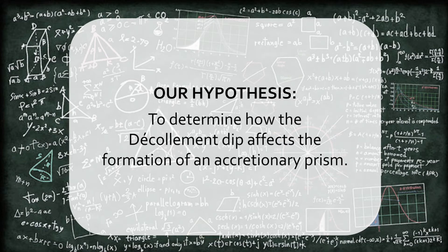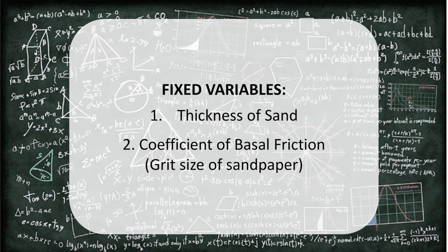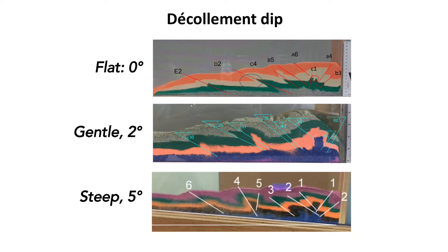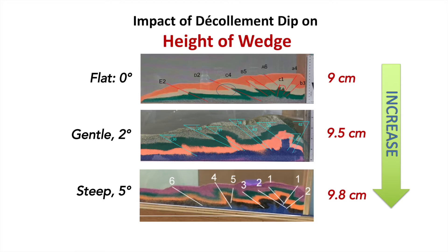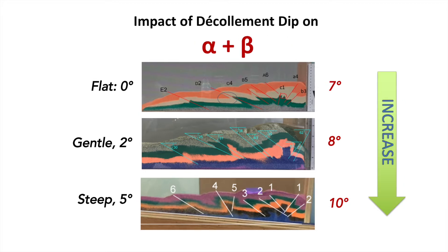To determine how the dip of the décollement affects formation of the accretionary prism, we compared our results with similar experiments conducted at different décollement angles. Our fixed variables are thickness of the layer and the coefficient of basal friction, using the same grid size of sandpaper. Based on dips of 0, 2, and 5 degrees, the overall trend shows that a steeper décollement dip gives a greater wedge height, a shorter wedge, and thus a greater amount of shortening. A steeper décollement dip also leads to a larger critical taper, which is the alpha plus beta value.